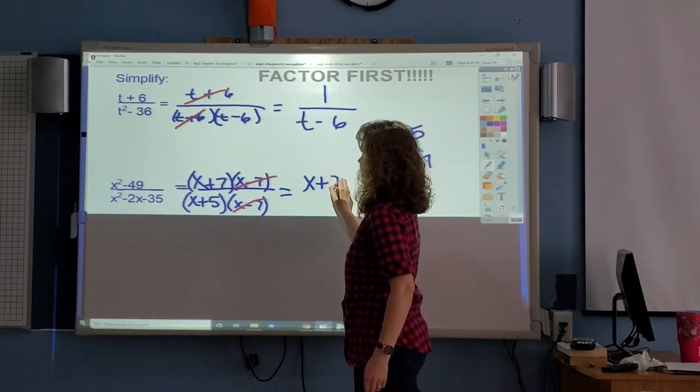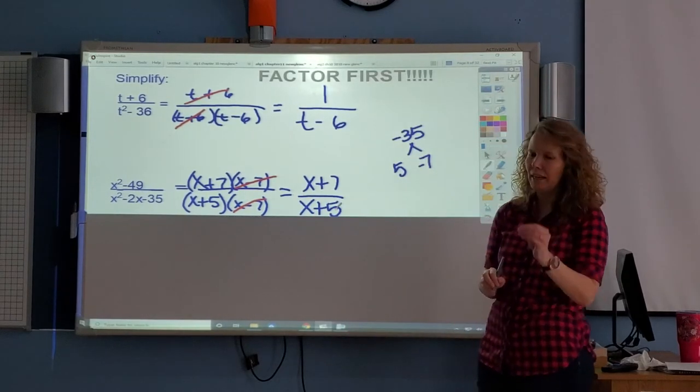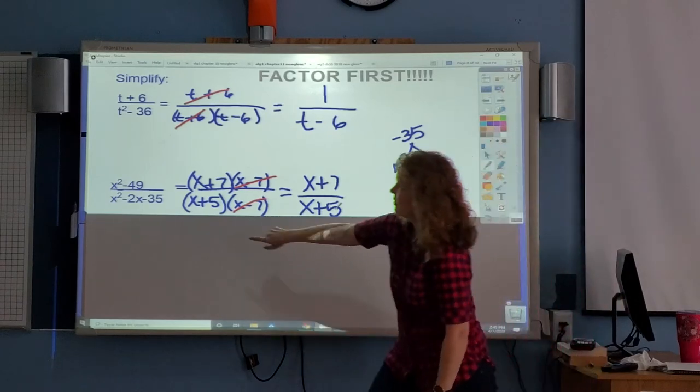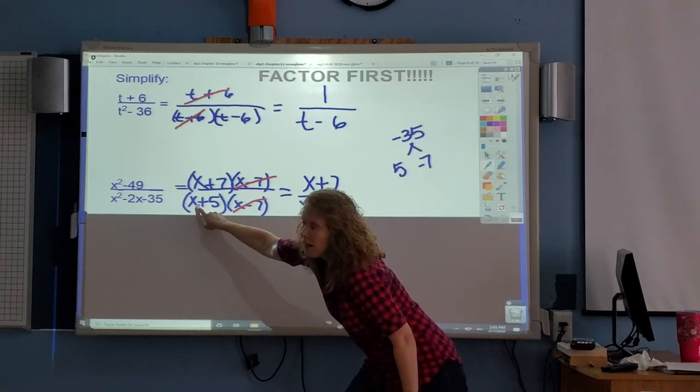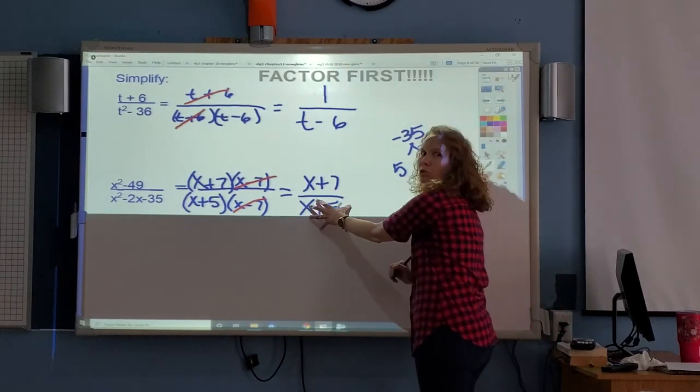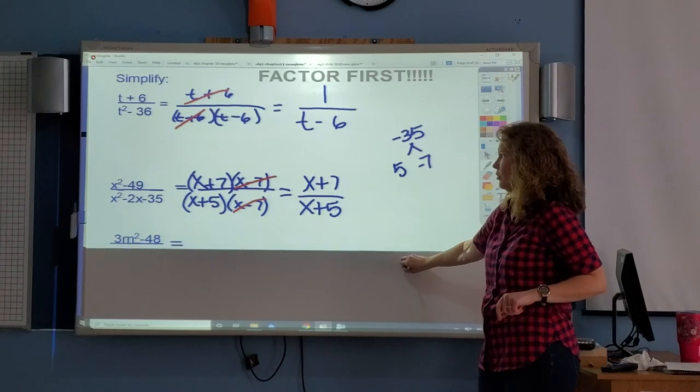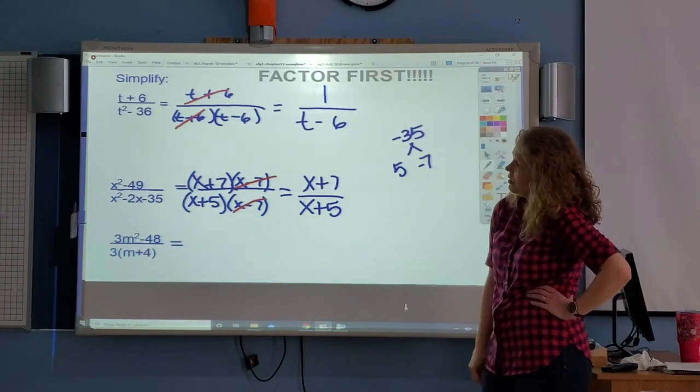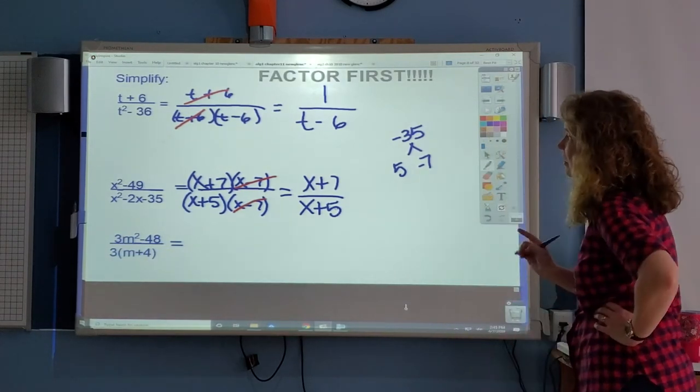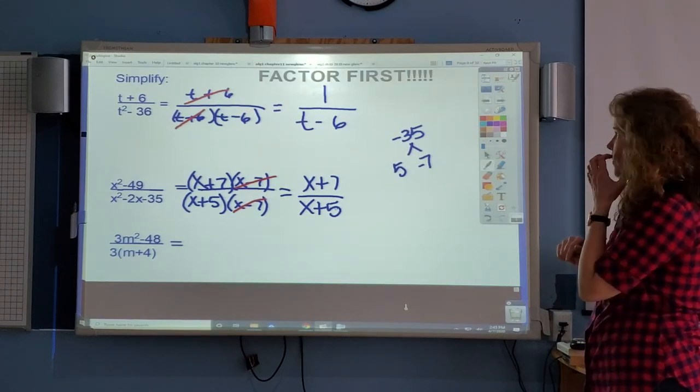Again, if they asked you for excluded values, x can't be negative 5, x can't be 7. So you don't look just here for the excluded values. Look after you factored.